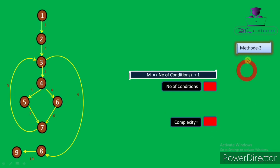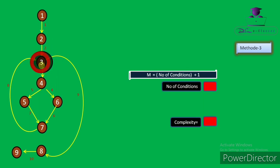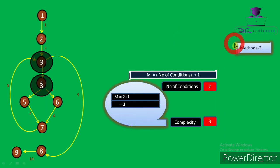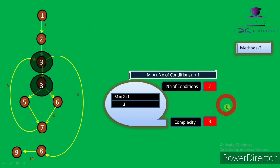The third method calculates cyclomatic complexity as the total number of conditions plus one: M = conditions + 1. In this diagram, there are two conditions — the while condition at one node and the if condition at node 4. So M = 2 + 1 = 3. You can see that whichever method you follow, you get the same cyclomatic complexity. So based on your requirement, you can use any method.